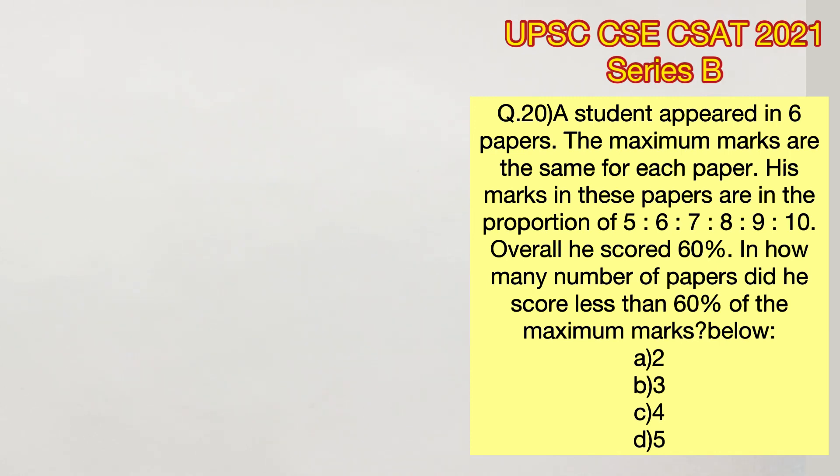A student appeared in 6 papers. The maximum marks are the same for each paper. His marks in these papers are in the ratio 5:6:7:8:9:10.